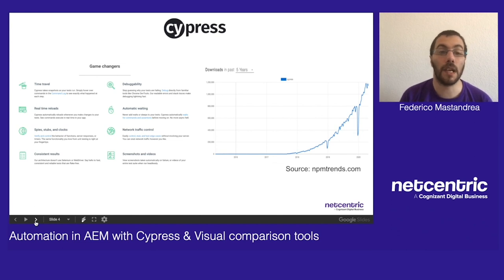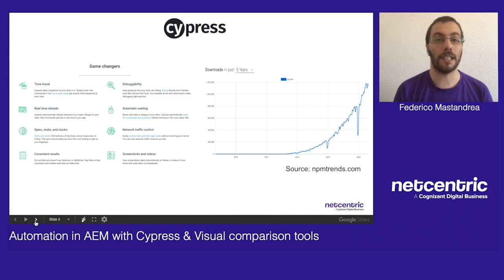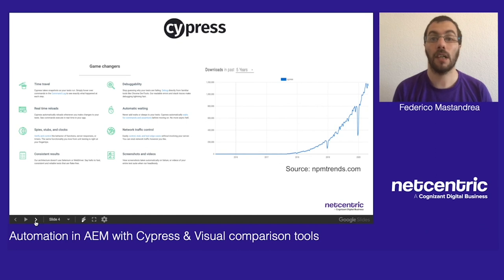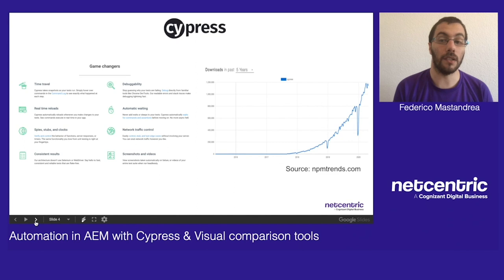Cypress is a trendy JavaScript end-to-end testing framework. As you can see on the graph on the right, it had a huge number of downloads in the last year, making it one of the best alternatives in the market. It has a special set of features that we thought were helpful to us: the ability to see what is happening in the browser at each step of our test, good error messages when things are failing, automatic waiting, and as I said earlier, screenshots and videos recorded by default. Let's see it in action.